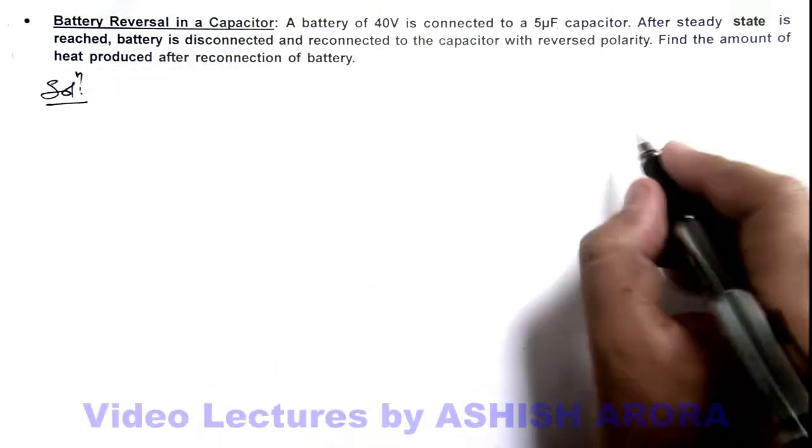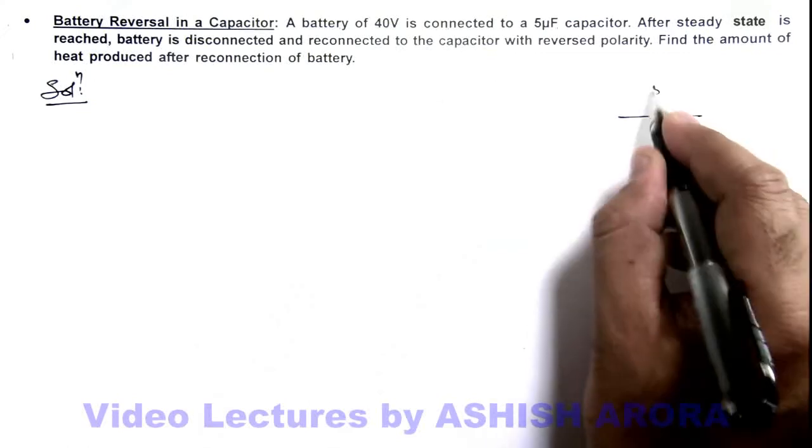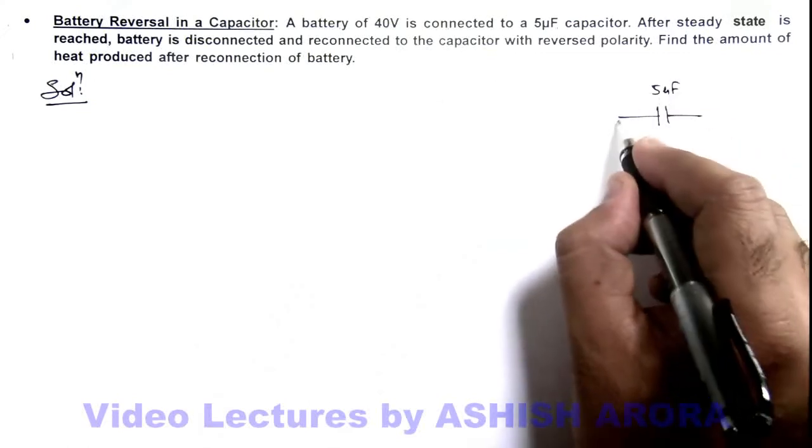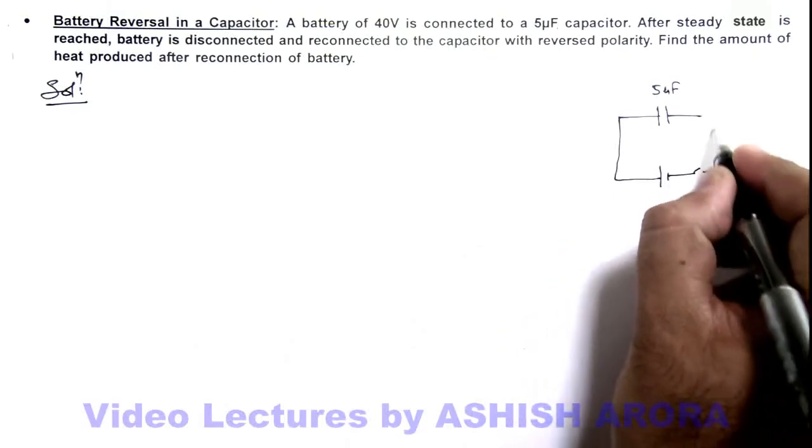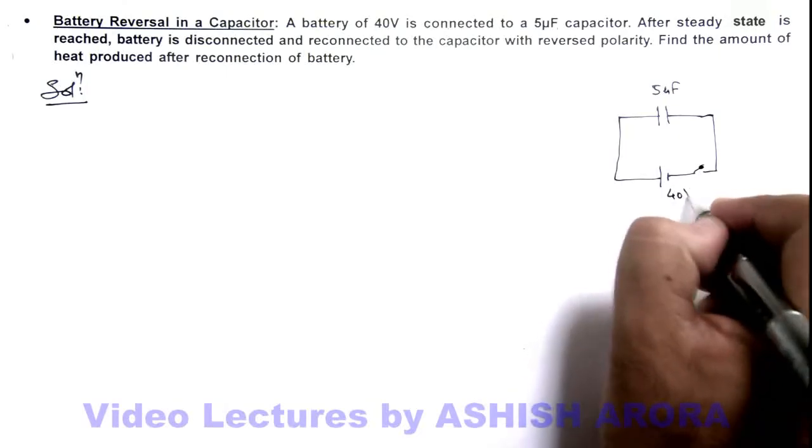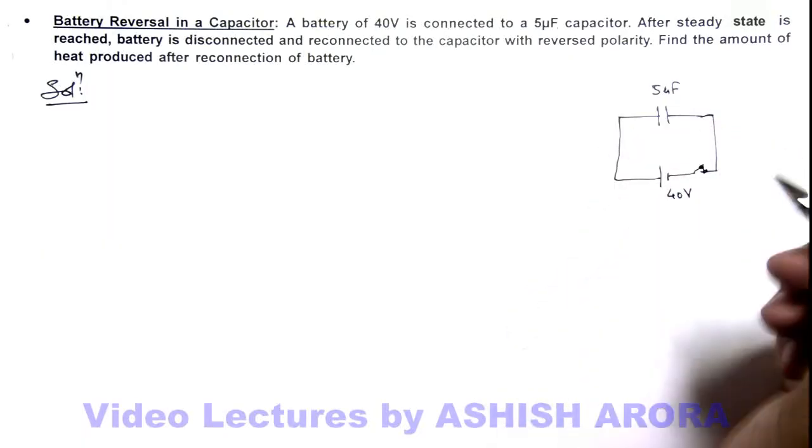Here if we draw the picture, we are given that there is a 5 microfarad capacitor which is connected to a 40 volt battery, along with a switch which is closed, and steady state is reached.